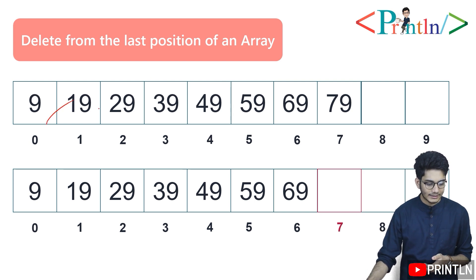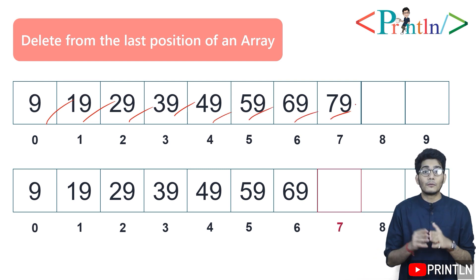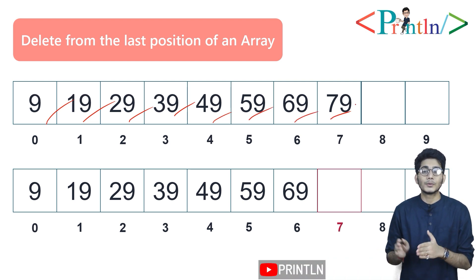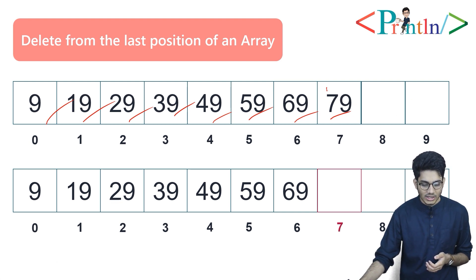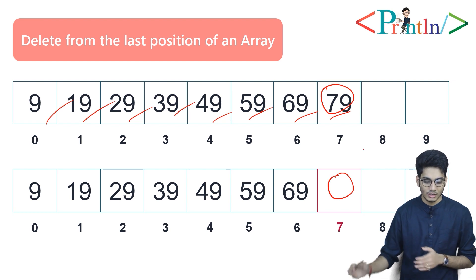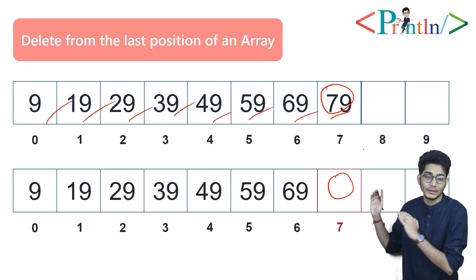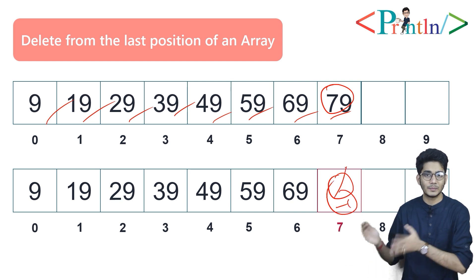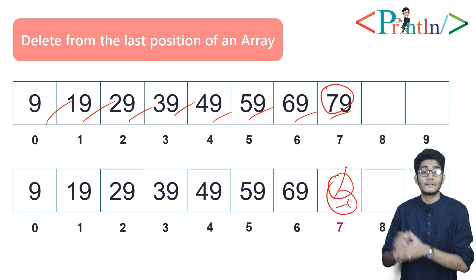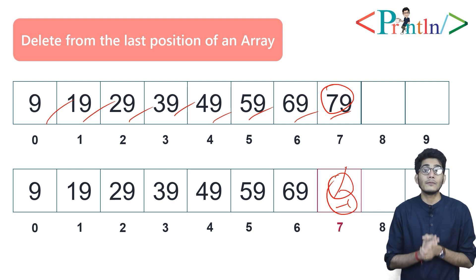In the first array we have 9 to 79. In the first block we have 9, then 19, 29, 39, 49, 59, 69, and 79. For deleting any element from the last position, we can initialize that block with zero. We have replaced that value — you can also set it to minus one or anything.